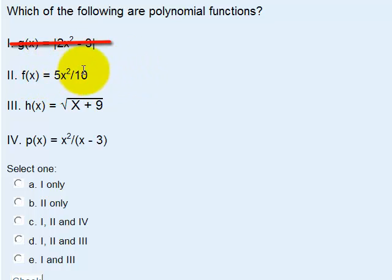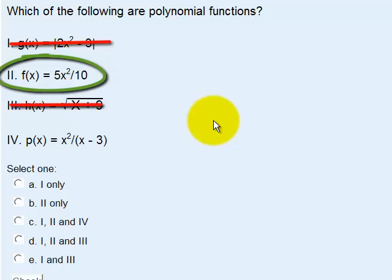Because it's a numerator, we're not going to be dividing by zero. So the third one, the h of x, the square root is actually a fractional exponent of one half.